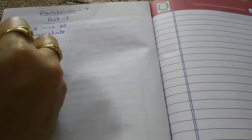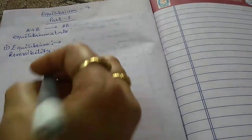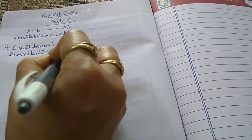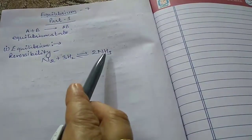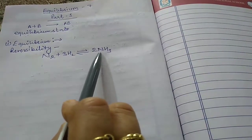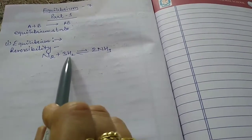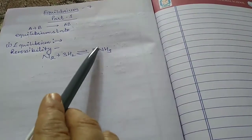There is one more term: reversibility, extracted from the term reversible. For example, we have the reaction N2 + 3H2 giving 2NH3. Such reactions are reversible. The meaning of a reversible reaction is that when N2 and 3H2 combine they produce 2NH3, and when 2NH3 is split it gives back N2 and 3H2. This is called a reversible reaction or reversibility.